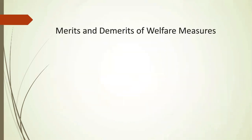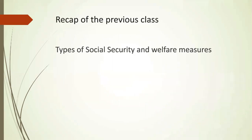Under that, Merits and Demerits of Welfare Measures. In the previous class, we had discussed about different types of social security and welfare measures. Which are the different types of social securities? It may be in the form of provision of canteen facility, medical facility, recreational facility, educational facility, providing sanitary facility, providing industrial safety provisions, provisions for restrooms, firefighting arrangements, fresh air, traveling allowance, industrial training, paid leave, sickness and maternity benefit, provident fund benefits, social insurance schemes, and so on.